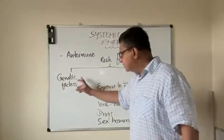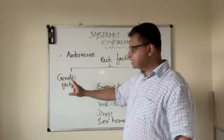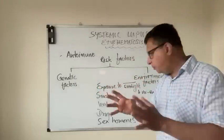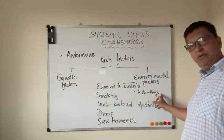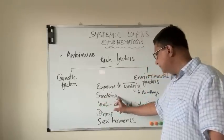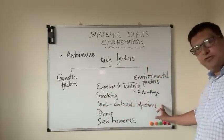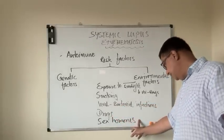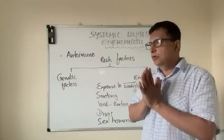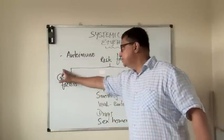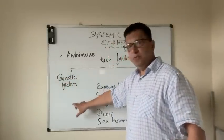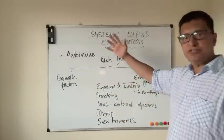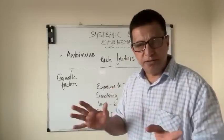When a particular person is genetically susceptible with the genes which can cause SLE and they get exposed to sunlight, ultraviolet rays, smoking, viral or bacterial infections, certain drugs, or sex hormones — especially estrogen — there is a high risk of developing systemic lupus erythematosus.